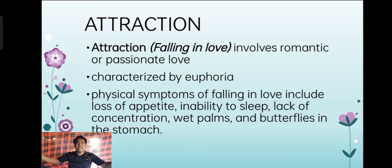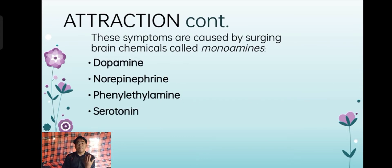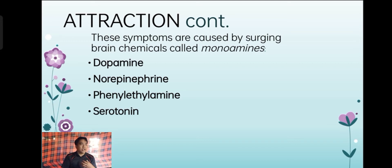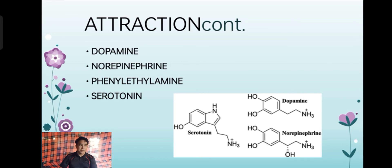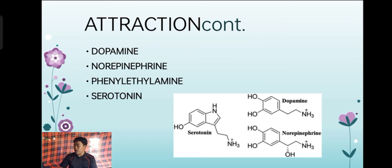Euphoria means you have this high ecstasy — you are so happy and jubilant because you are attracted to someone, and sometimes it is romantically speaking. Attraction causes brain chemicals or sparks in our brain. These are the monoamines: dopamine, norepinephrine, phenylethylamine, and serotonin. The most famous ones are serotonin and dopamine, which contribute to attraction towards our counterpart.